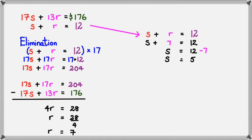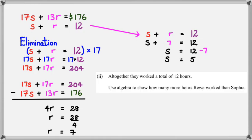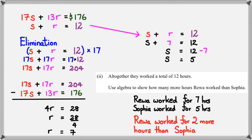Once again, leaving the answer there is not enough. Remember to write that final statement: Riva worked for 7 hours and Sophia worked for 5 hours, which means Riva worked for 2 more hours than Sophia. That's about it for this question. If you still aren't sure about how to do this, just post a question in the comments. Thanks for watching.